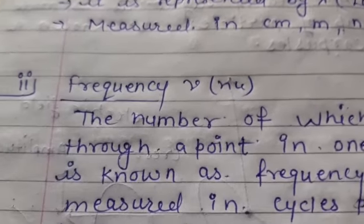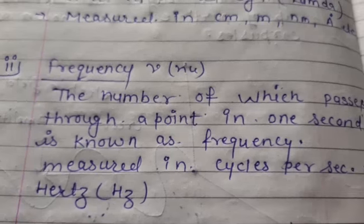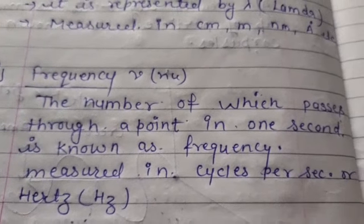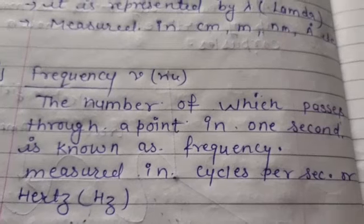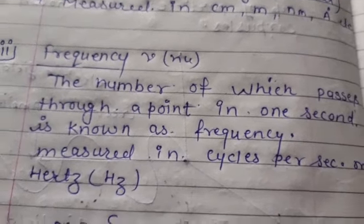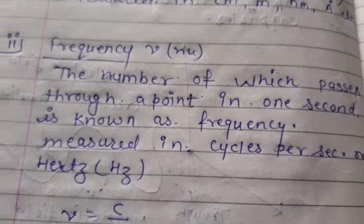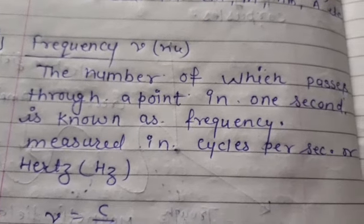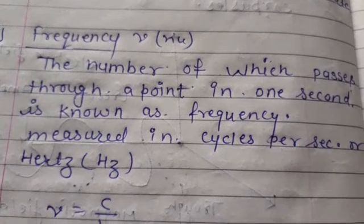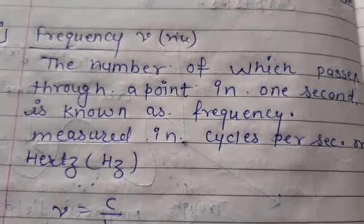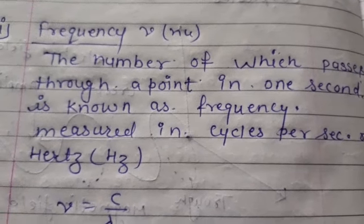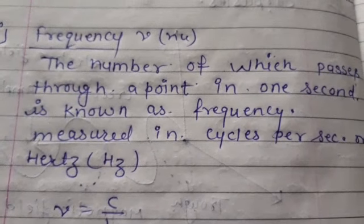The next term is frequency, denoted by nu (ν). Frequency means how fast the wave is moving — that is what we call frequency. That is enough for today's class. Thanks — have a nice day. We will meet again in the next lecture with a new topic. Thank you.